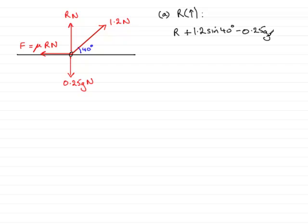And this is the resultant force. Remember the friction here is perpendicular to this vertical line, so it has no effect in the vertical direction. So this is the resultant force acting on the ring in the vertical sense. And because it's in equilibrium, it equals 0.